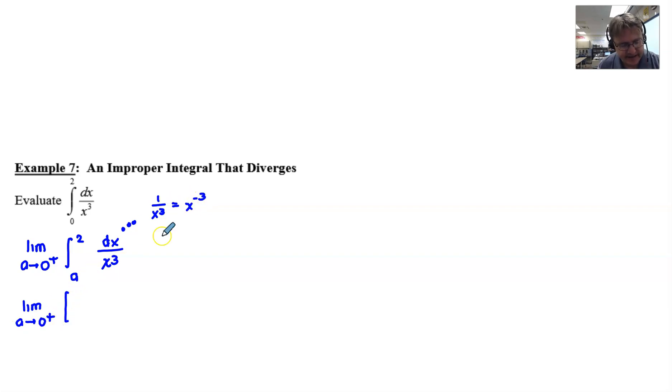The antiderivative of x to the negative 3 is x to the negative 2 over negative 2, which one way to write that would be negative 1 half times 1 over x squared. That would essentially be negative 1 over x to the negative 2. Now we're going to use our boundaries from 2 to a, and our limit is still being quite patient here.